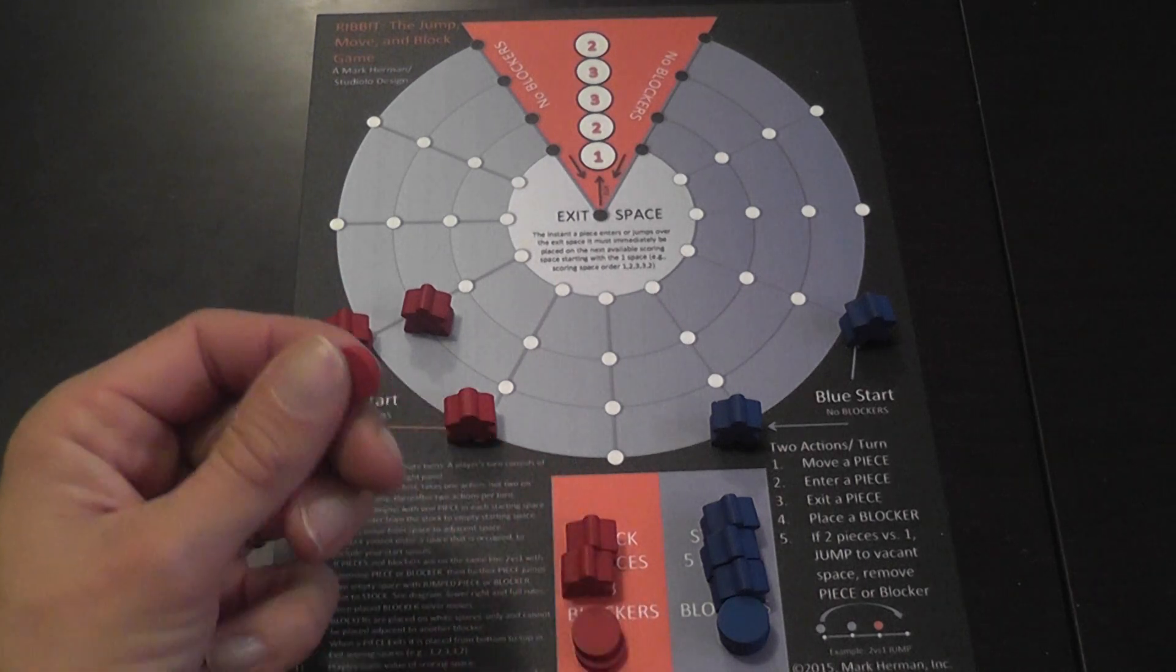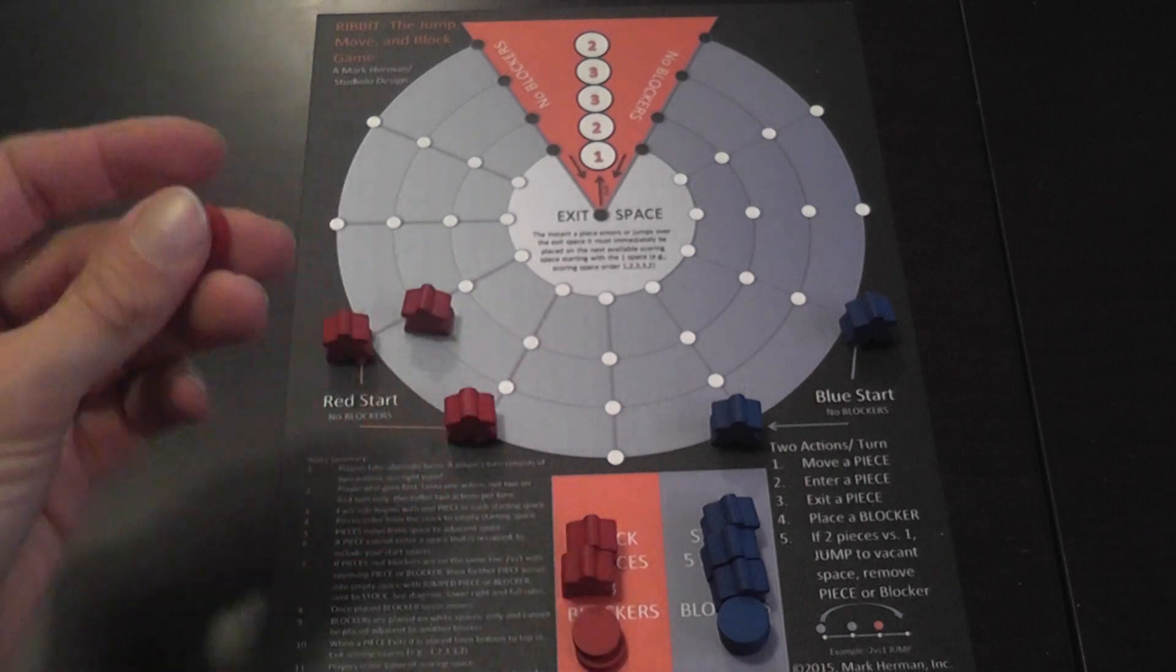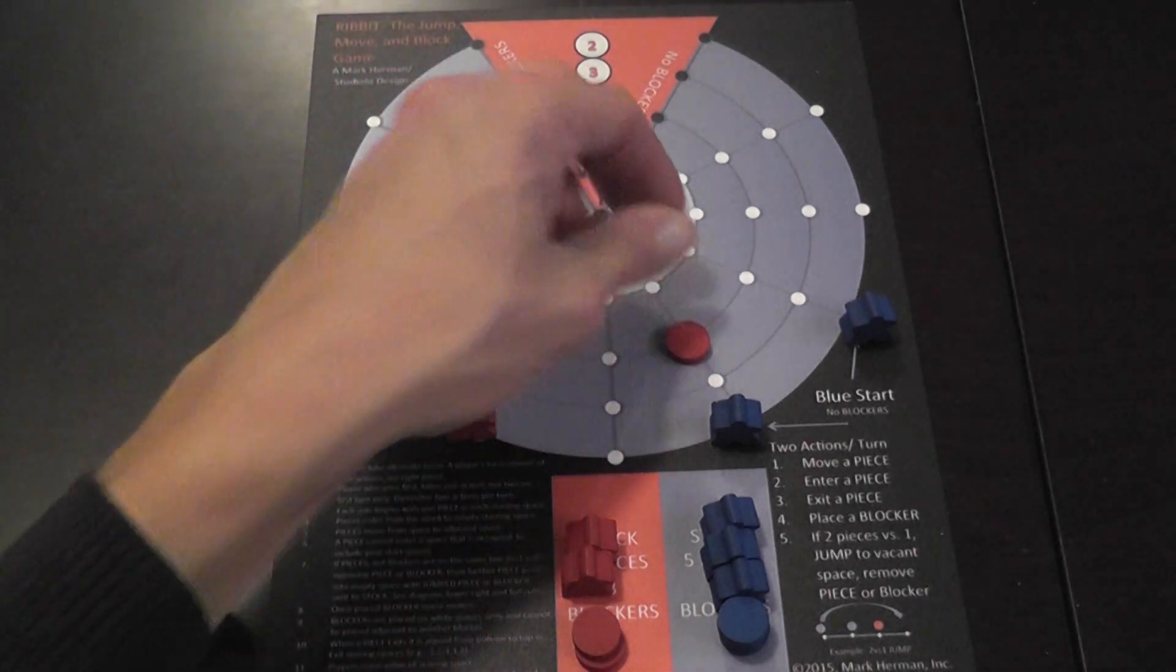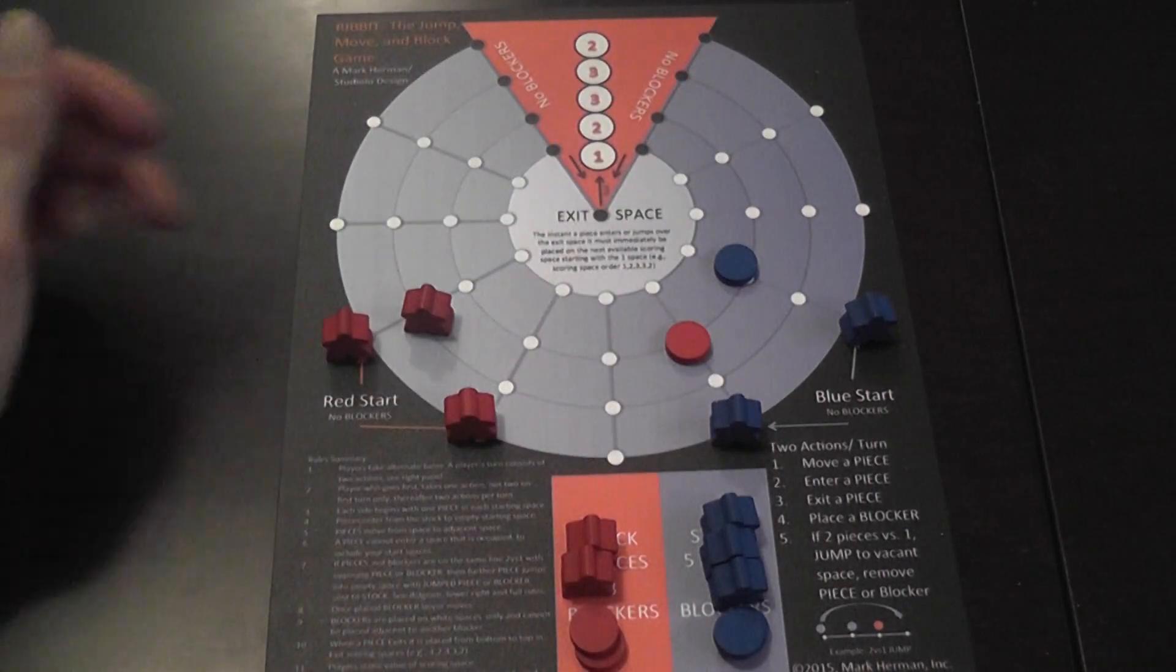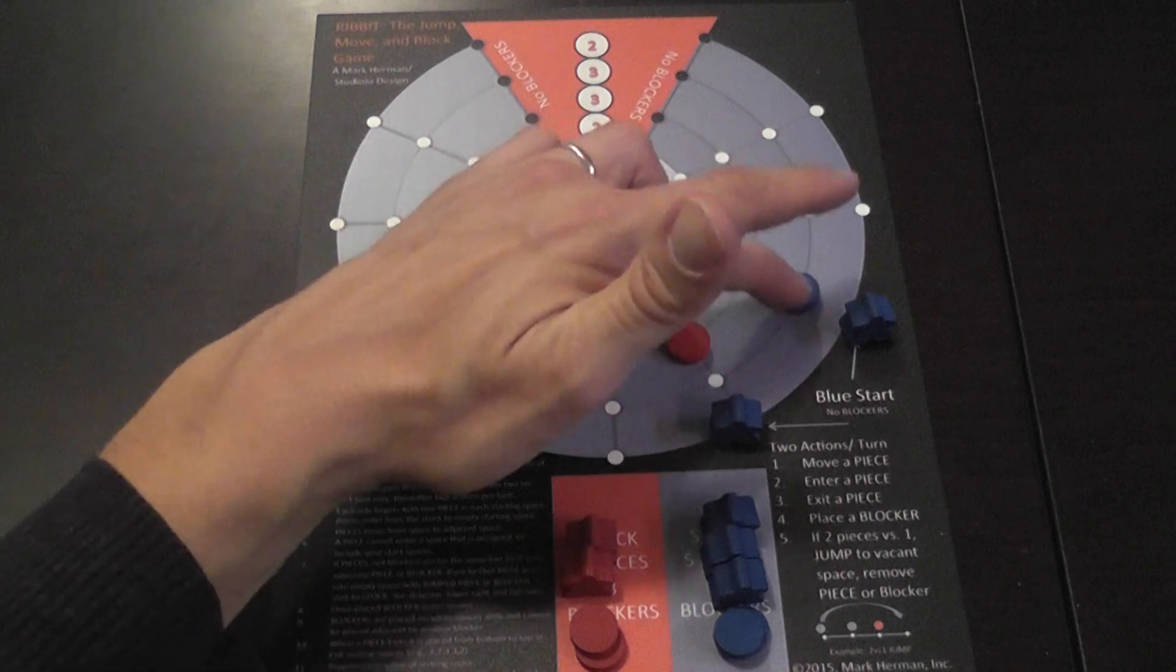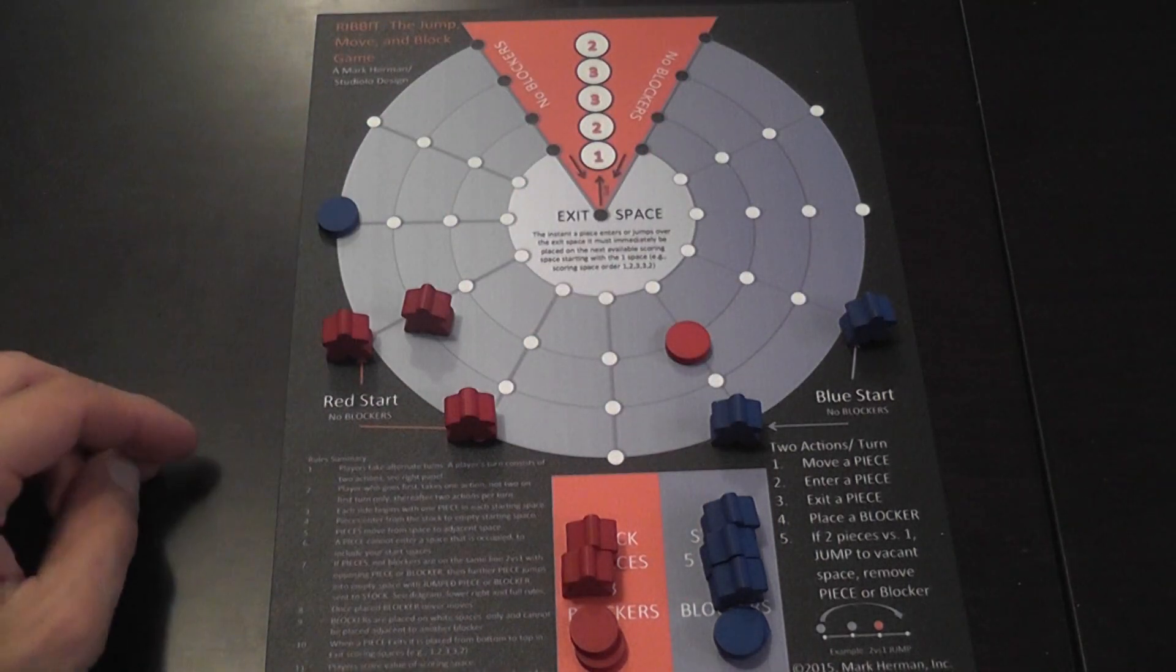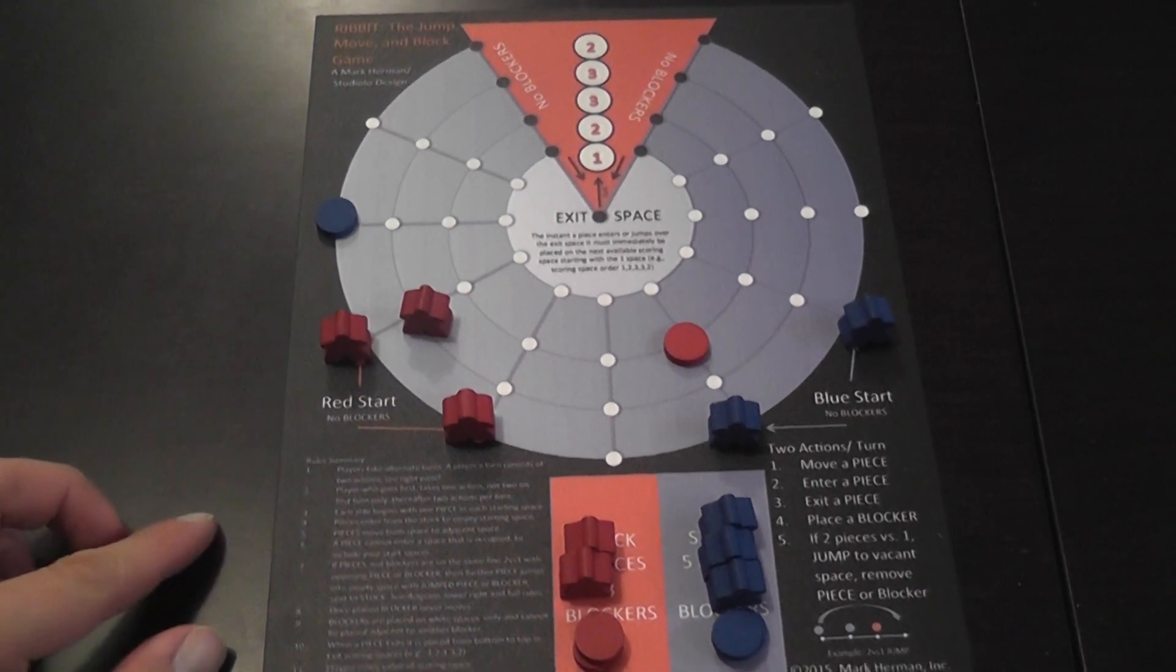Or I can, this is very interesting, spend an action to place a blocker on the board. The blocker needs to be placed on an empty dot and any empty dot as long as it is not adjacent to another blocker. So this is not a legal placement but this would be. Blockers can be adjacent to meeples of any color but again they cannot be adjacent to blockers.